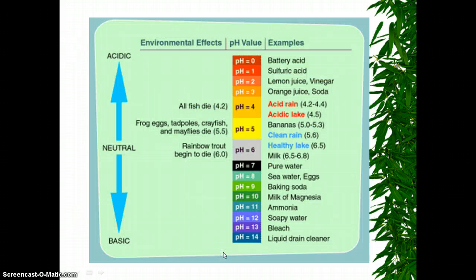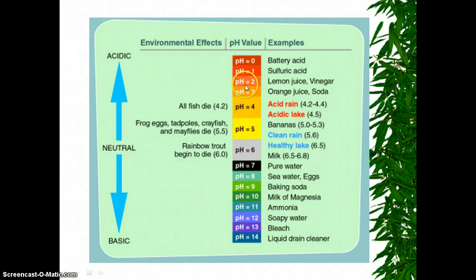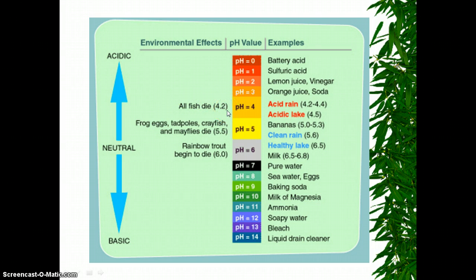Acid rain: pollution combines with water in the air. When you see smokestacks or car exhaust burning fuel, it releases pollution into the air. That pollution combines with water when it rains and becomes acidic. You need to know the pH scale — 7 is neutral, acids are below 7. Acid rain is between 4.2 and 4.4. All fish die at 4.2. If it rains enough to change the acidity of an entire pond, all the fish could die — or it might kill just the eggs or certain species. The acid rain changes the pH of ecosystems and organisms can't survive there.